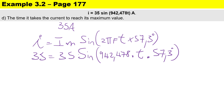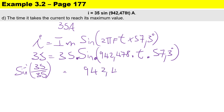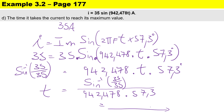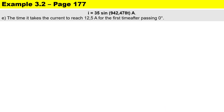Dividing both sides by 35 and taking sine inverse: sine⁻¹(35/35) equals 942.478 × t × 57.3. Since 35/35 equals 1, we get t equals sine⁻¹(1) divided by (942.478 × 57.3). Therefore the time for the current to reach its maximum value is 1.667 milliseconds.